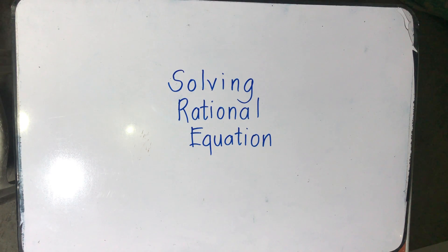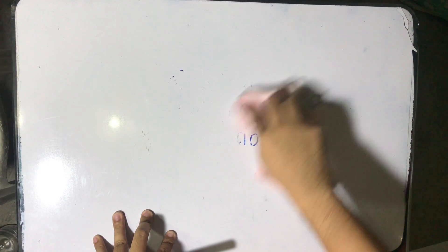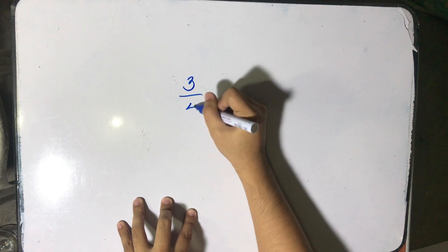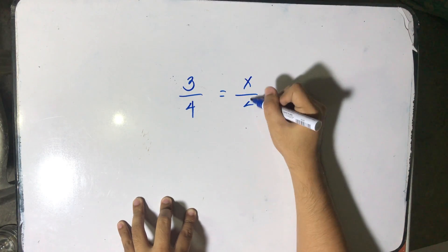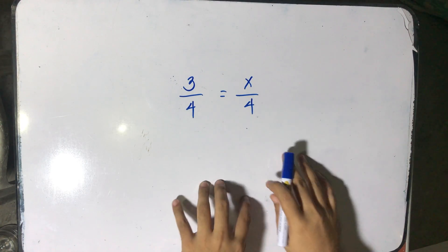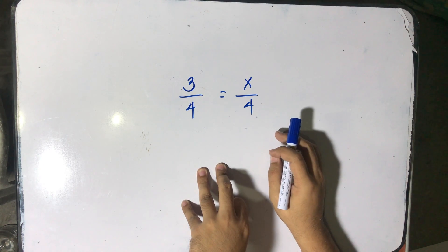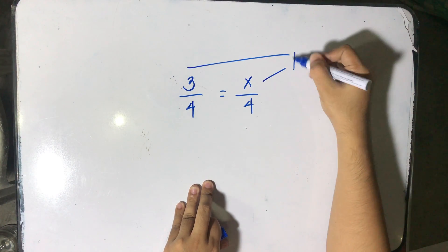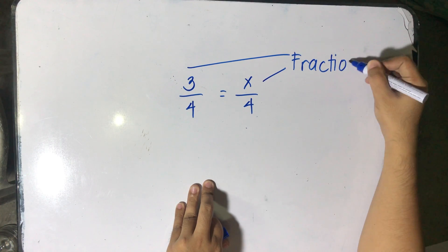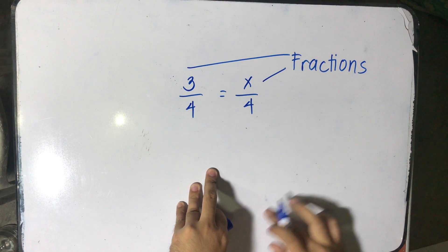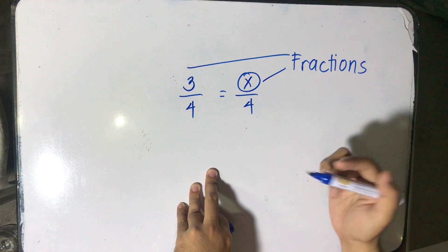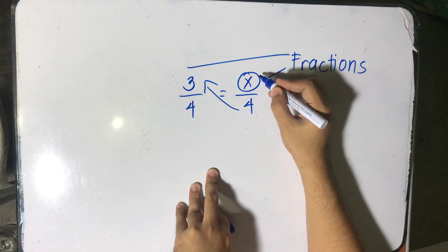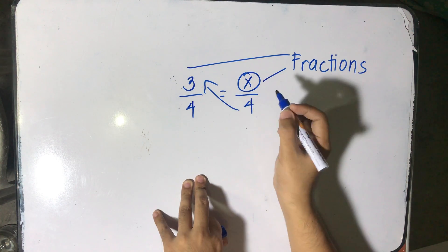Before I discuss solving rational equations, let us first look at this example: 3 over 4 is equal to x over 4. We have a fraction on the left side and a fraction on the right side. The very first thing I need to do is to retain x on the right side and then cross multiply 4, because we are solving for the value of x.